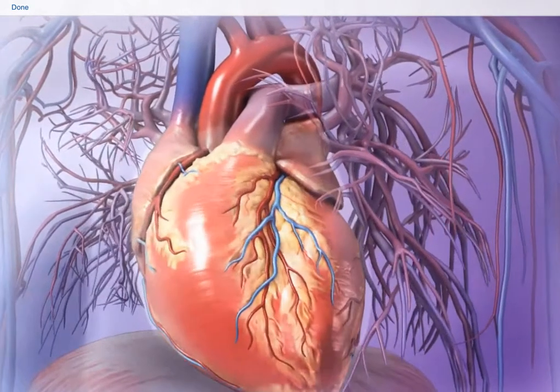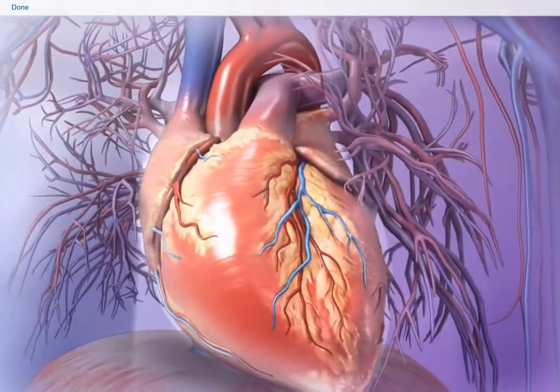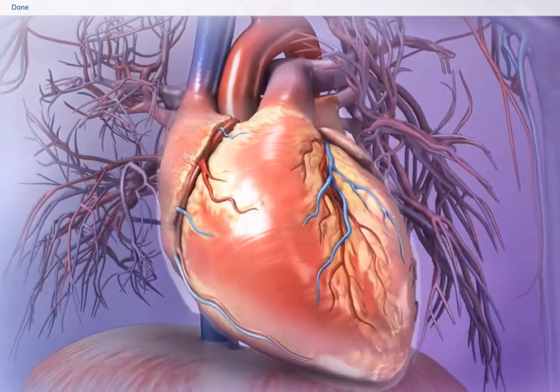On average, a normal adult heart is about the size of a fist and weighs approximately 300 grams, less than one pound.